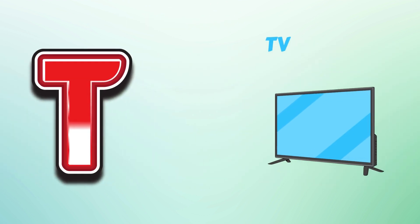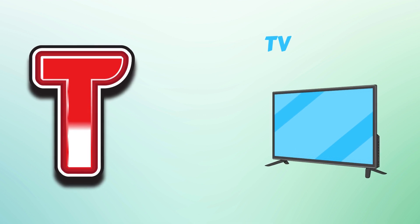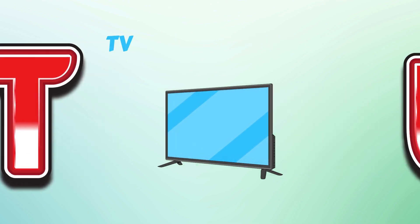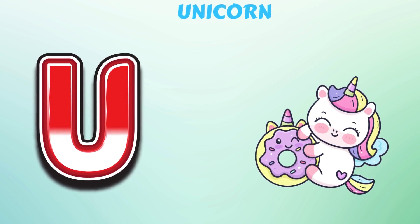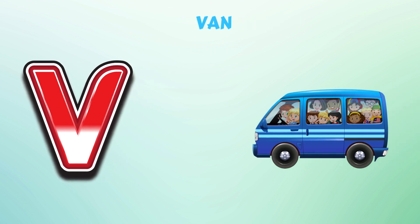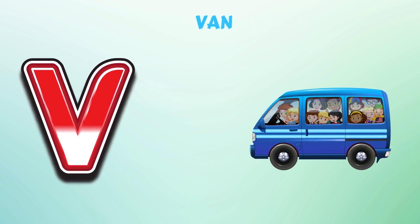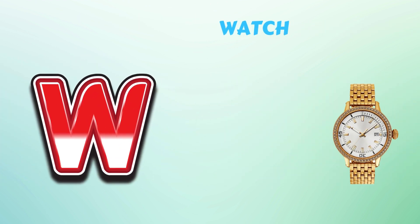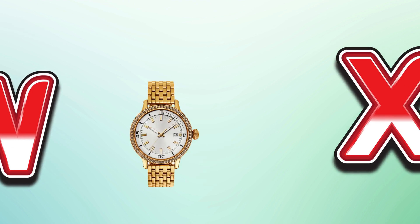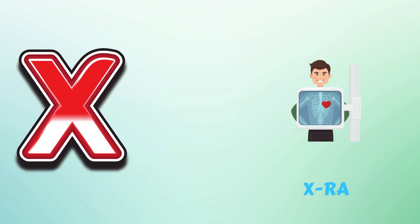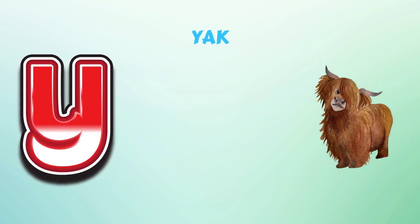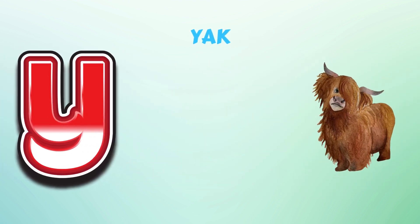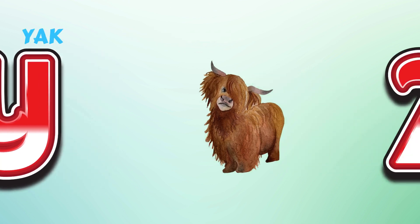T. T is for TV. U. U is for Unicorn. V. V is for One. W. W is for Watch. X. X is for X-Ray. Y. Y is for Yak. Z. Z is for Zoom.